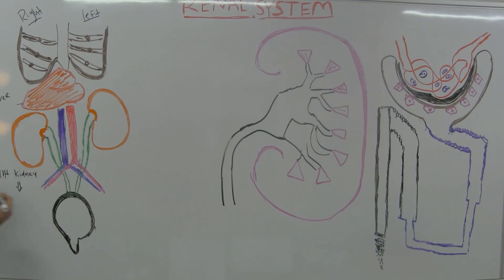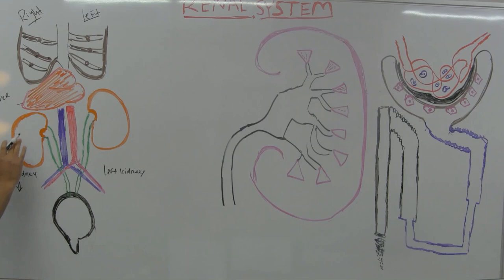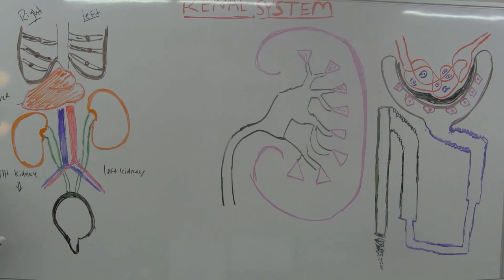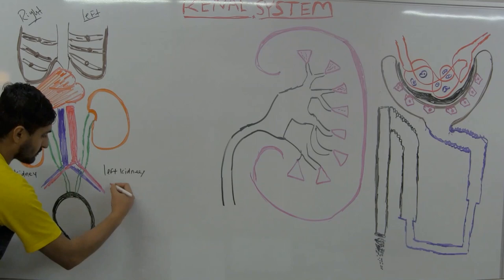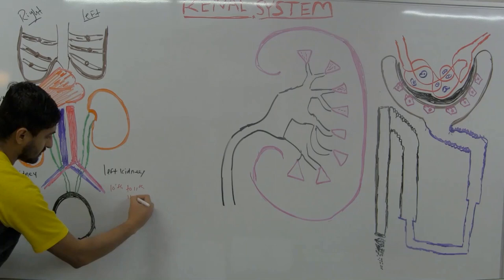This is my left kidney. Usually what happens is that the kidney merges through this rib cage. The right kidney is located around the 12th rib, and the left kidney is slightly higher, around the 10th to 11th ribs. The left kidney is slightly higher than the right kidney because the liver is suppressing the right side.